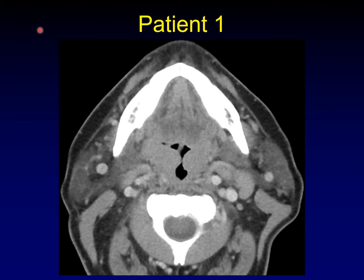Here's patient one. You can see that there is enlargement of the palatine tonsils bilaterally. This is true throughout Waldeyer's ring, not just the palatine tonsils, but also the lingual tonsils and the adenoids — those are the elements of Waldeyer's ring.